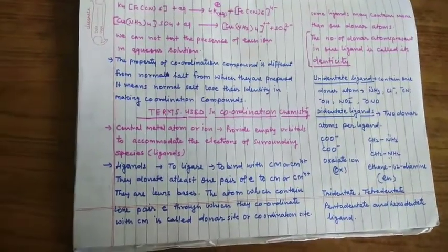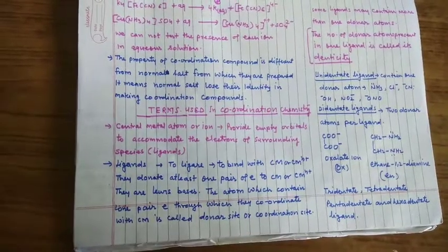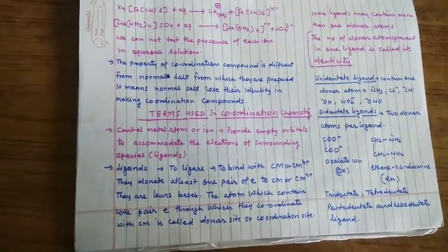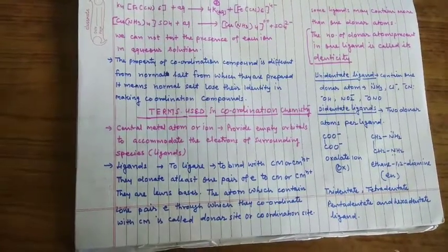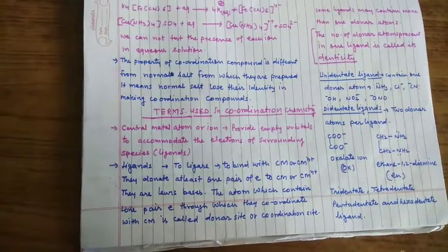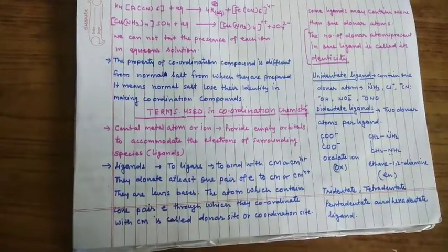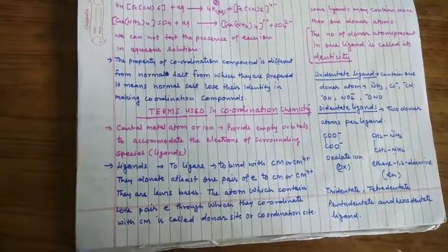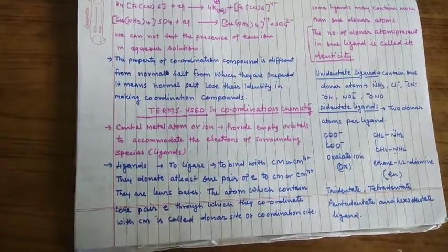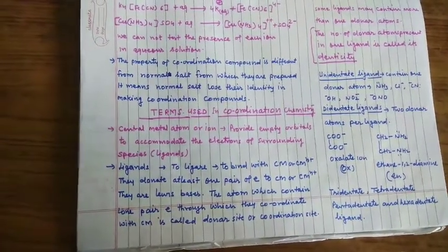Ligands. Ligand का मतलब होता है ligate. Ligate means to bind with central atom or central metal ion. They donate at least one pair of electron to CM. They are Lewis bases because they all contain lone pair.